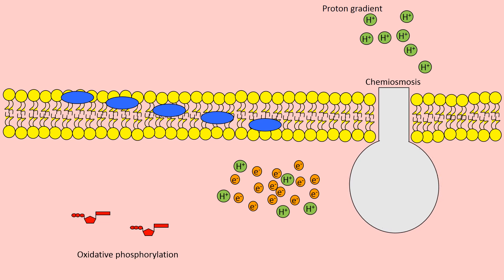This is called oxidative phosphorylation. You would have come across substrate level phosphorylation before, so let's look at why this is called oxidative phosphorylation now.